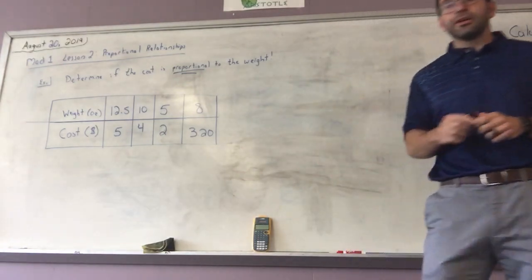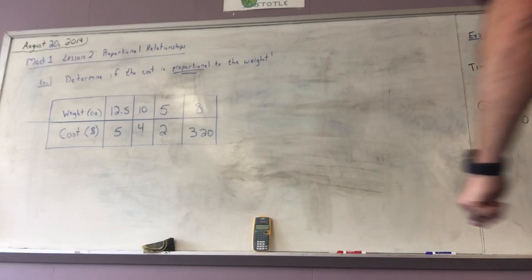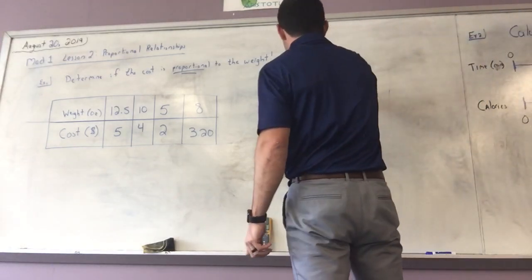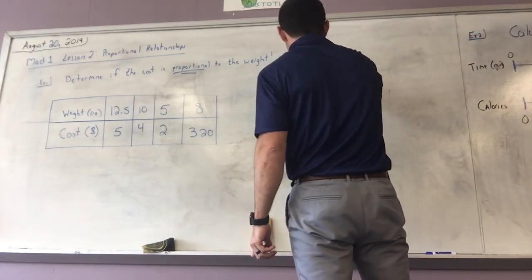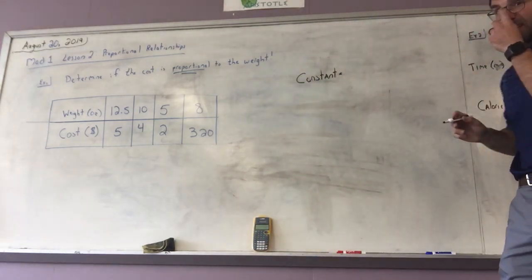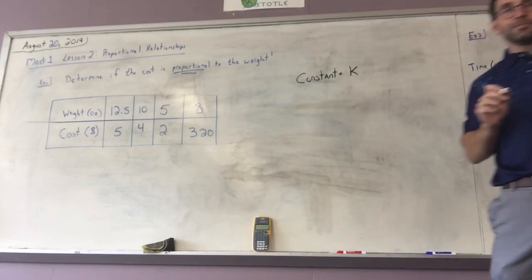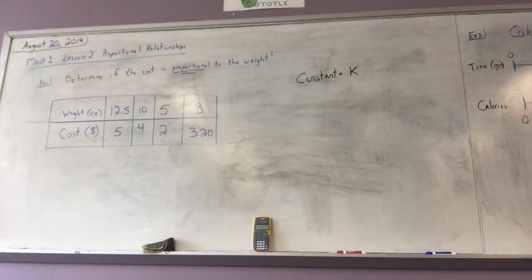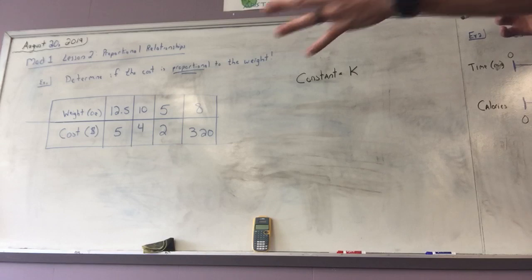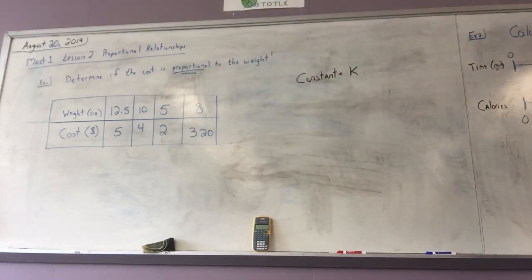When we're talking about a proportional relationship, especially with a table of values, we need to have a constant. A constant means something that is unchanging. We label that constant with the letter K — a lowercase letter K. We're going to have three letters by the time we're done.